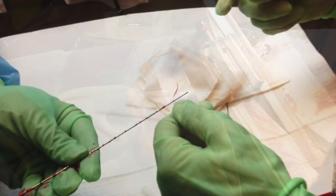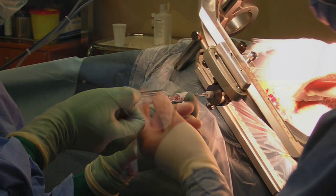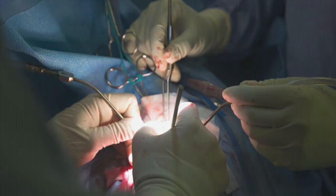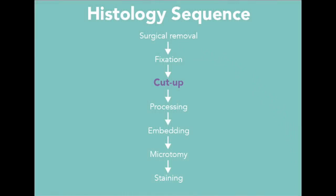After tissue biopsy, timely fixation is essential in order to kill tissue and prevent degradation via autolysis. Normally the surgeon does this upon removal, but sometimes the sample is dissected and sampled in a fresh state. Whether fresh or fixed tissue is used depends on the test to be performed or the preference of the institution. The example shown in this video is of a fresh sample, so we're going to skip forward a step in our histology sequence to cut up.